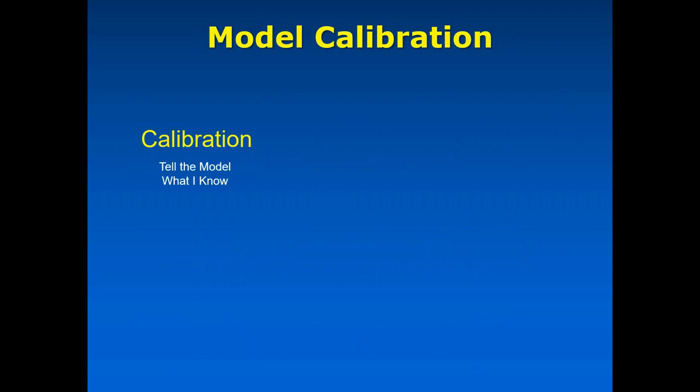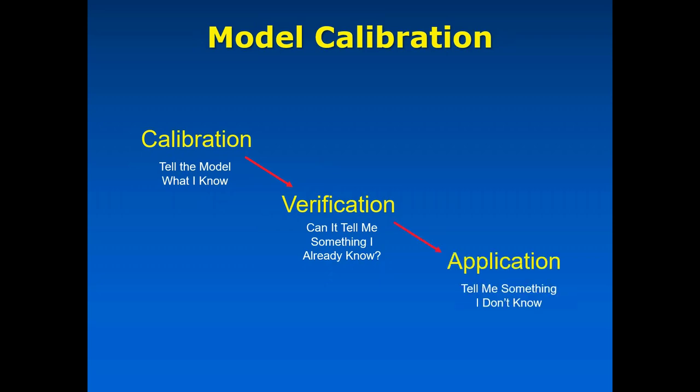The purpose of calibration is to give you confidence in applying your model down the road. Calibration tells the model what we know to be true because we've measured it in the field. Then there's a verification step where you take the calibrated model and test it against an independent set of data — asking, can the model confirm something I already know? If that's true, you move on to application: asking the model to tell you something you don't know, like what happens if we take three tanks out of service during a major wet weather event.